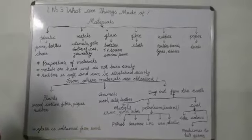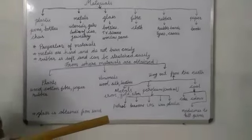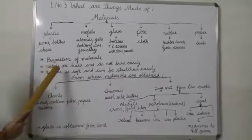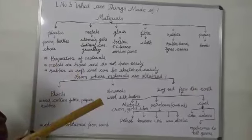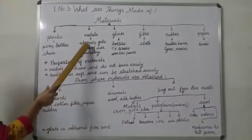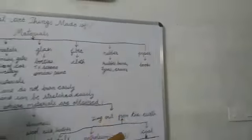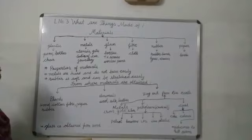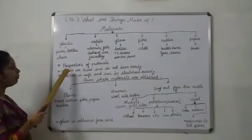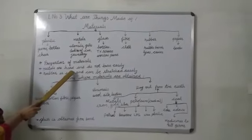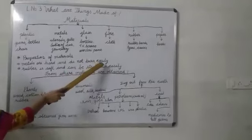By seeing those properties, these materials are chosen to make a particular thing but not other. For example, we use metals to make utensils. We do not use paper to make utensils. Why?